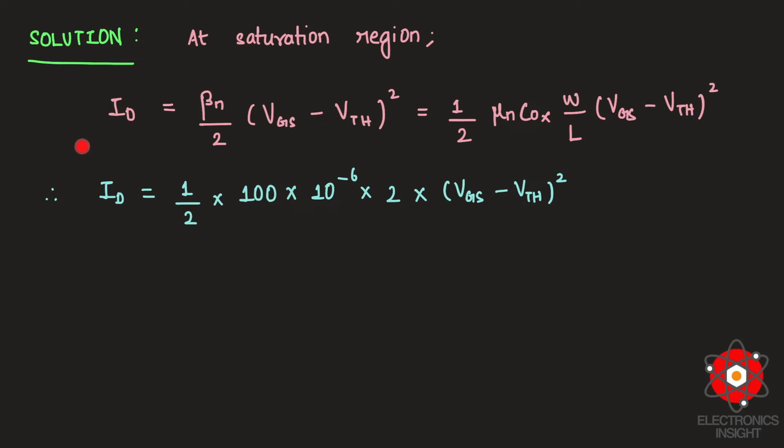After considering the drain current equation at saturation region, I have just substituted the given values where μₙCₒₓ was 100 μm/V², W/L ratio was 2, and we don't know the gate to source input voltage. Instead, Vth was given but we don't know Vgs minus Vth because Vgs is not given. So let us do one more small analysis where the hint given initially is the transistor M1 is operating in saturation region.